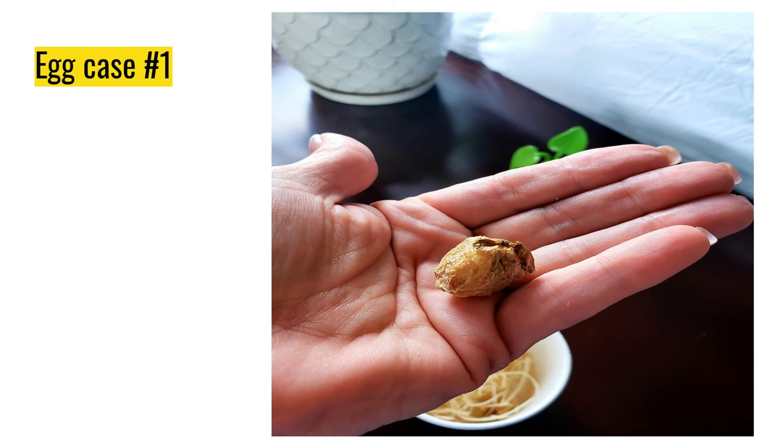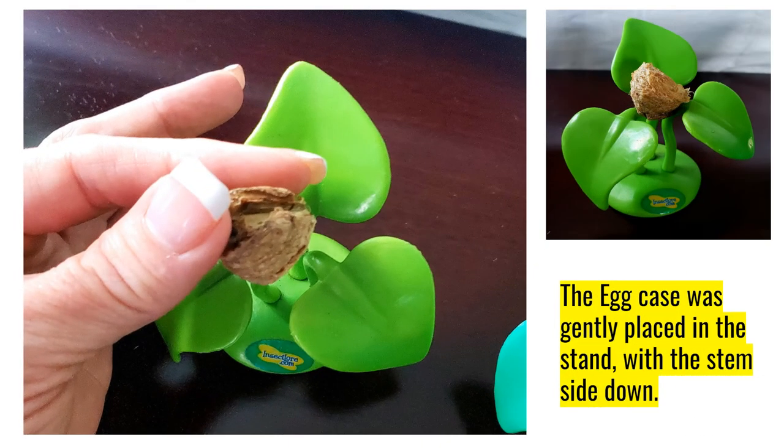Egg case number one. So let's take a look at him really good. Take a look at how rough he looks and looks like something you wouldn't even notice if you saw it stuck in a tree. The coolest thing is, is on the back side, you see where they took it off the tree. You can see where the actual stem was of a tree branch that that particular egg case was on. So when I'm handling the egg cases, I make sure to handle them very gently. And so the egg case was gently placed in the stand with the stem side down because that would simulate how it would be in the forest and that's how it would be on the tree.